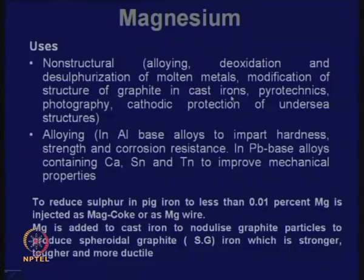Magnesium is also used in pyrotechnics — that is in firecrackers. It used to be very commonly used in photography because when it burns it emits a lot of light. Forty or fifty years ago you used to have flashbulbs that you just burn once for a lot of light; there is a magnesium filament inside.